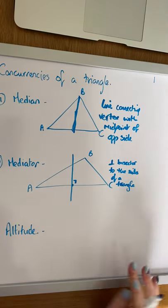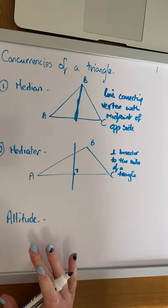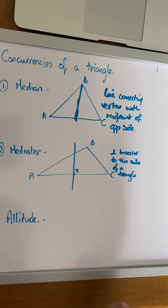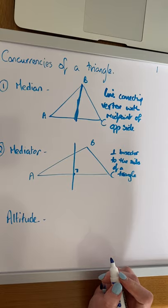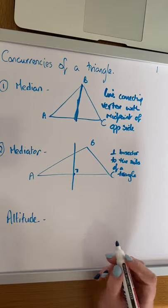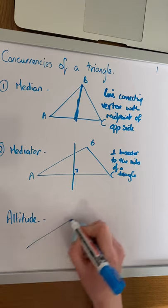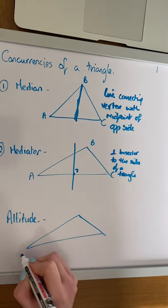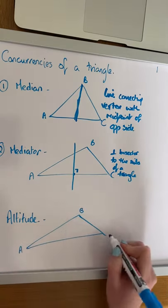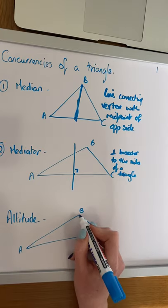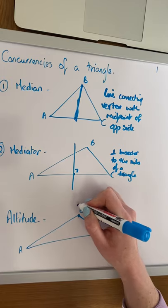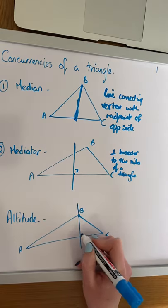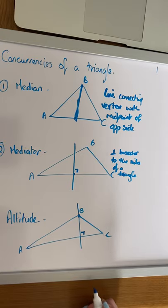The last definition we need to know is the altitude of a triangle. The altitude is a line that goes through the vertex of a triangle and is perpendicular to the opposite side. If we look again at our triangle ABC, concentrating on vertex B, the altitude would be a line that goes through B and is perpendicular to the line AC.